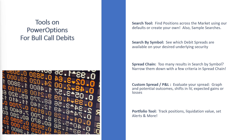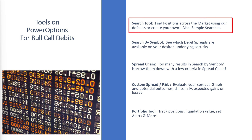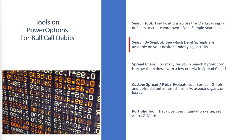Let's review the tools that are available on PowerOptions for bull call debit spreads. The Search tool — find positions across the universe of options using our defaults as the stepping stone, or create your own personal search. There are also various themed sample searches available.